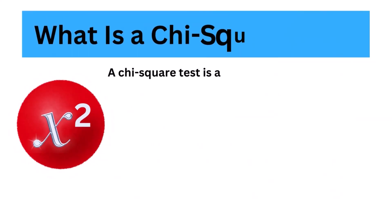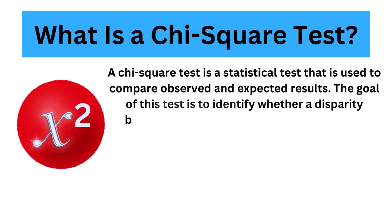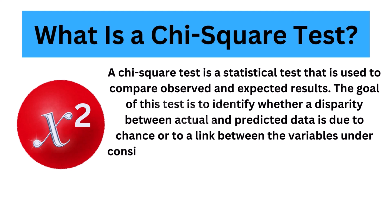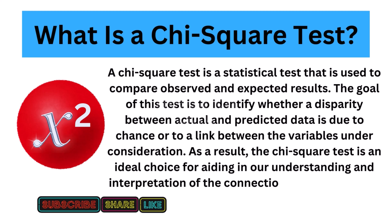A chi-squared test is a statistical test that is used to compare observed and expected results. The goal of this test is to identify whether a disparity between actual and predicted data is due to chance or to a link between the variables under consideration. As a result, the chi-squared test is an ideal choice for aiding in our understanding and interpretation of the connection between our two categorical variables.